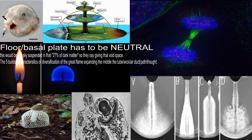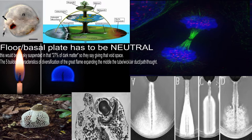So the basal plate is basically the neural tube. In the nervous system, the basal plate is the region of the neural tube ventral to the sulcus limitans. It extends from the rostral mesencephalon — the midbrain — to the end of the spinal cord, which is that tube.